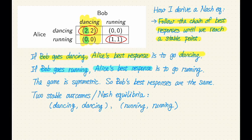And if Bob goes running, then Alice prefers going running as well. So since the game is symmetric, Bob's best responses are the same as Alice's. Which means you can think about this game as a coordination game. And in any kind of coordination game, it's best if players coordinate on doing the same thing, taking the same action. This is the case here.